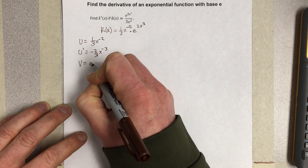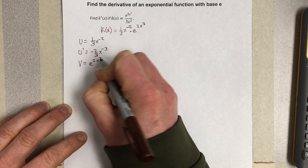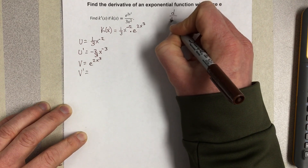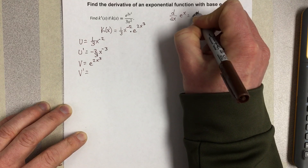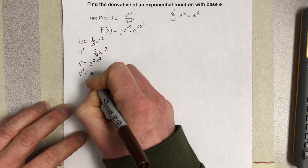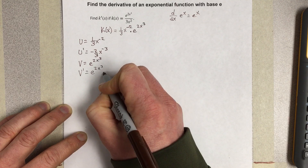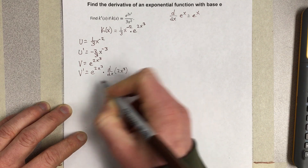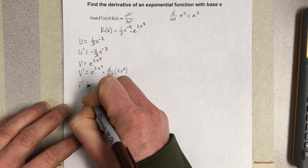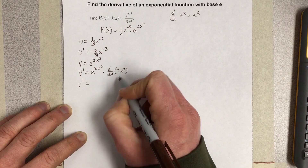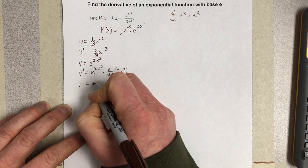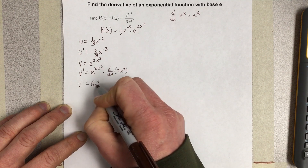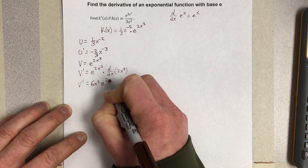v is going to be e to the 2x cubed, and v prime — I've got a chain rule here — so I take the derivative of the outside. The derivative of e to the x is itself, so I get the same thing, times the derivative of the inside, which is 2x cubed. The derivative of that inside gives us 6x squared, so v prime is equal to 6x squared times e to the 2x cubed.